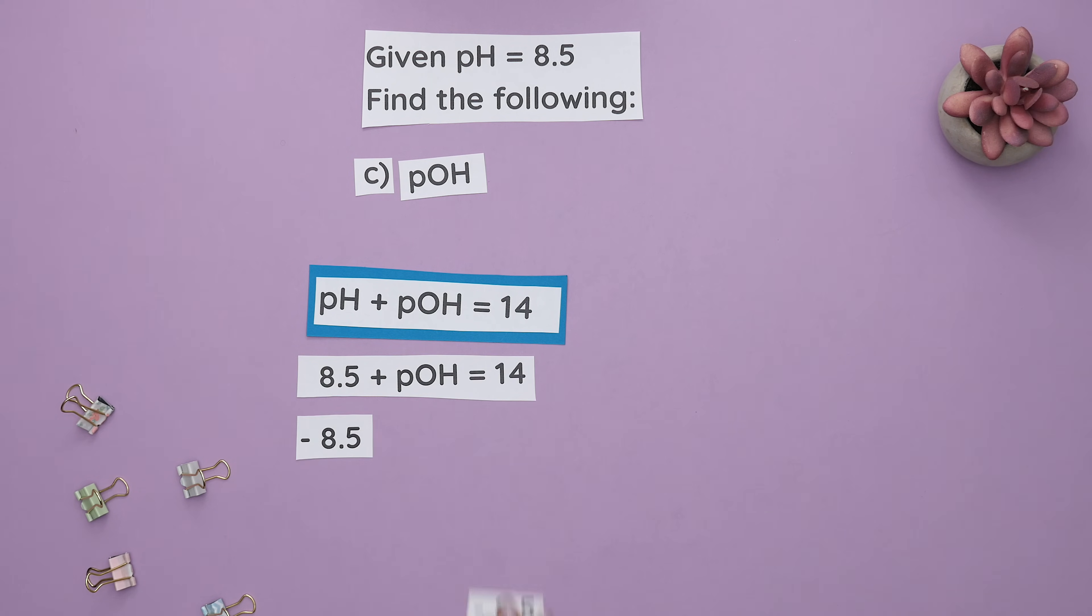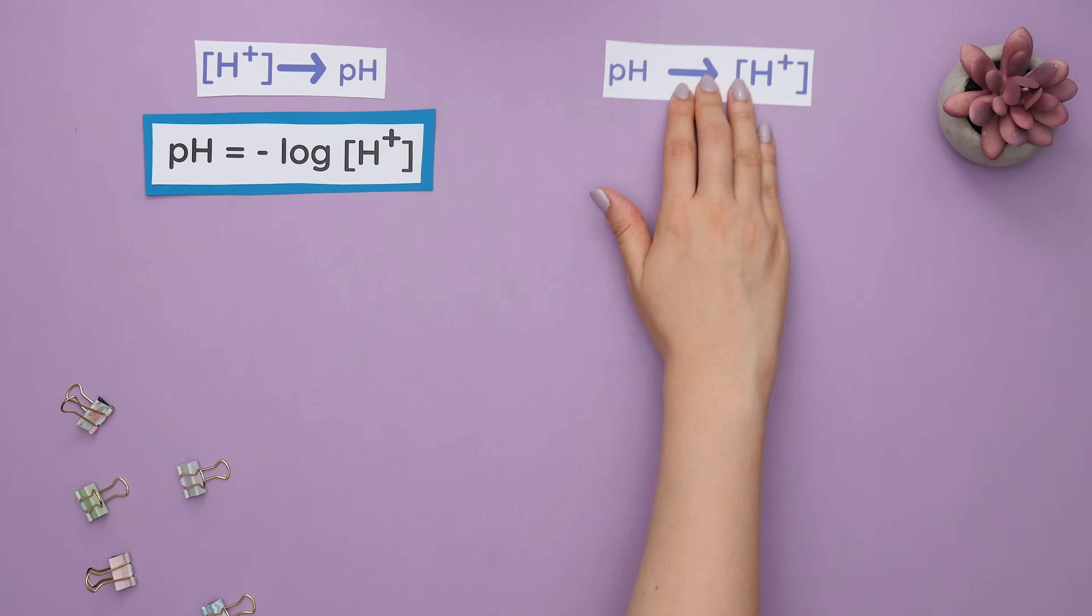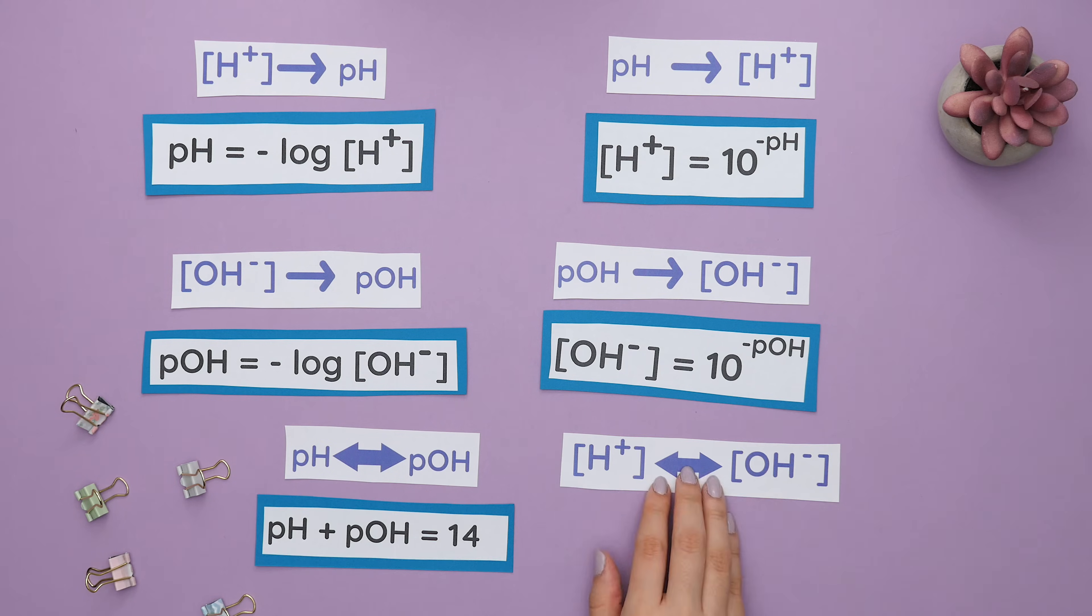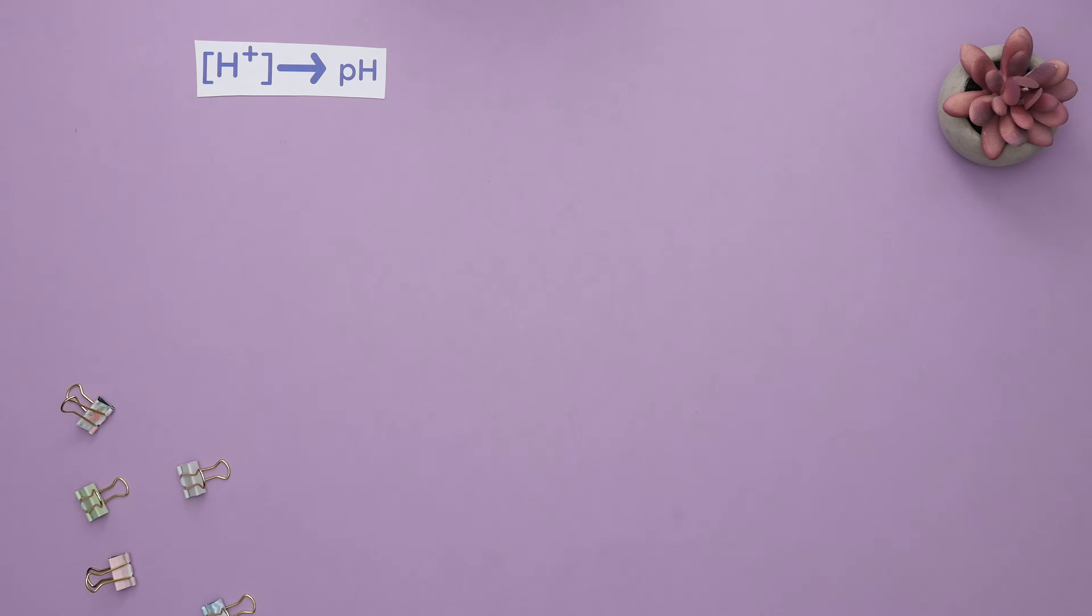Now here's a summary of when to use each formula. When going from your acid concentration to pH, use this formula. Go in the opposite way from pH to acid concentration, use this.